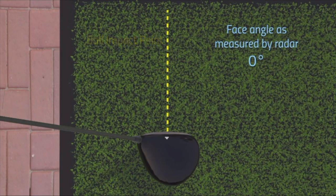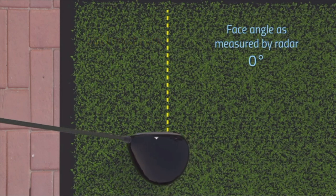When most golfers look at a face angle reading on a launch monitor, they naturally assume that's where the sweet spot was oriented, but this animation can clearly show you how that can be very misleading with a radar launch monitor.